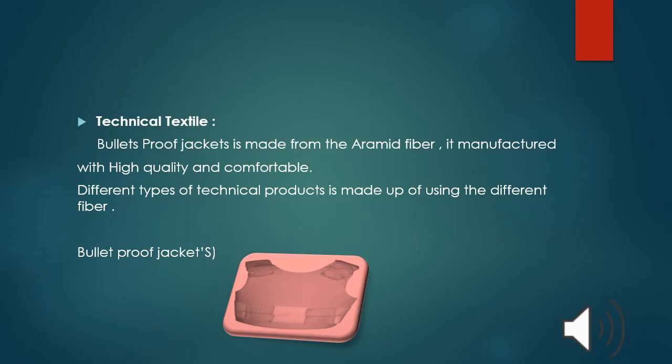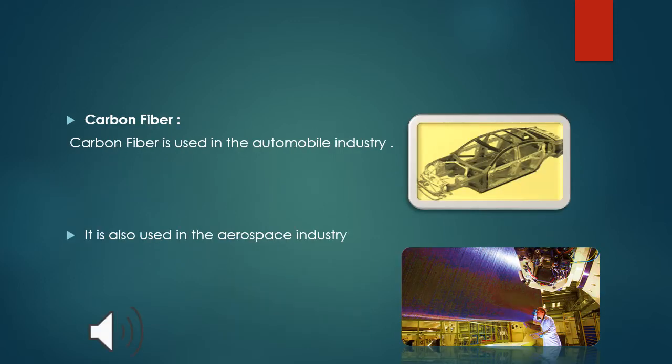Technical textile. Bulletproof jacket is made from aramid fiber. It is the most important application of fiber in textile with high quality and comfort. Different types of technical products are made using different fibers. The most important and most strong fiber is carbon fiber. It is used in the automobile industry for making cars and other heavy vehicles. It is also used in the aerospace industry. The picture shows the use of carbon fiber in the aerospace industry.